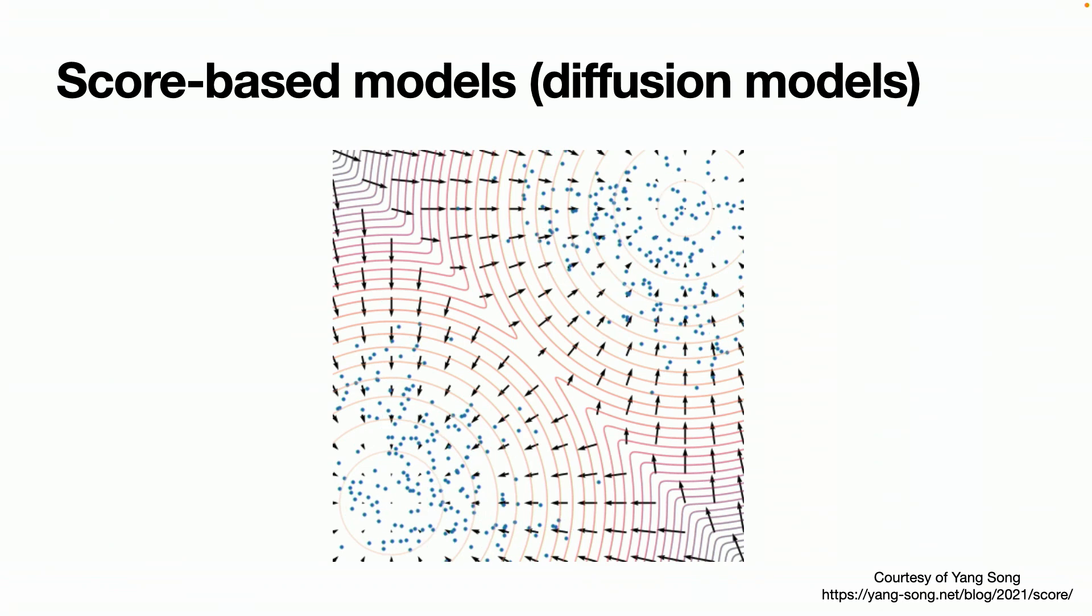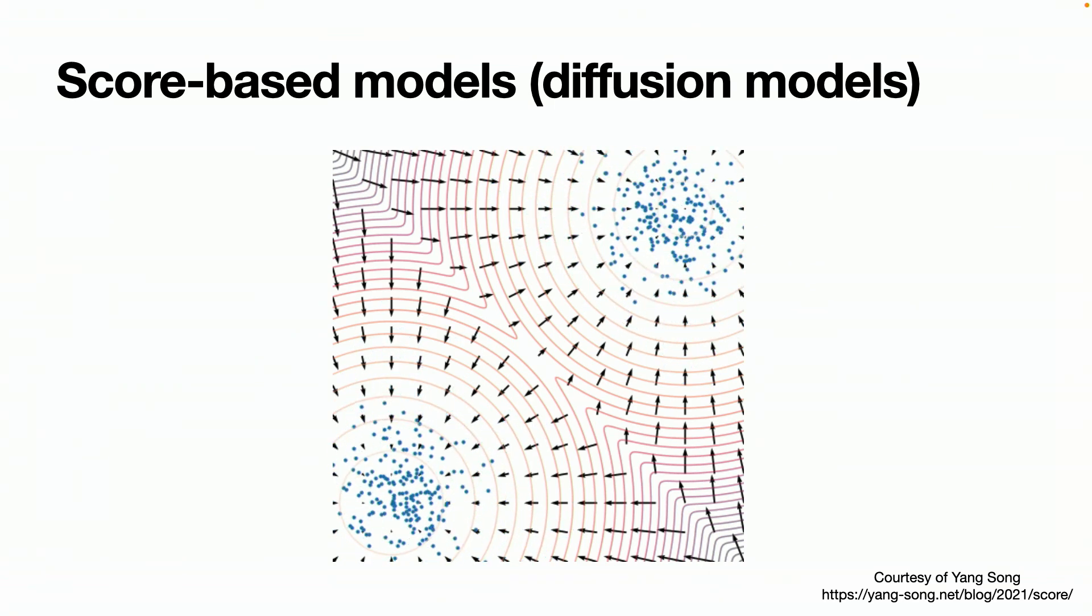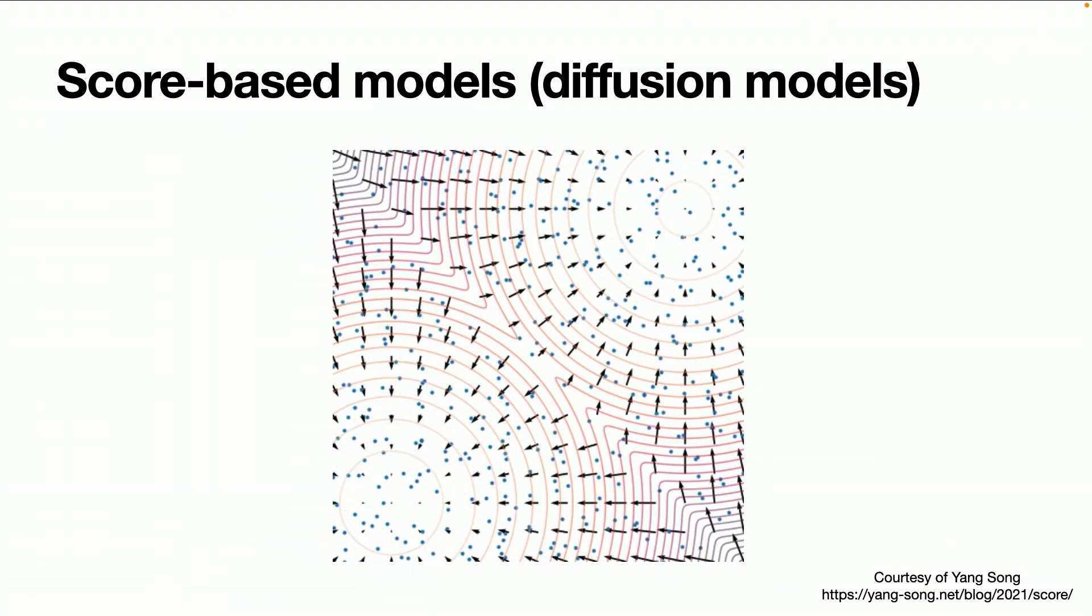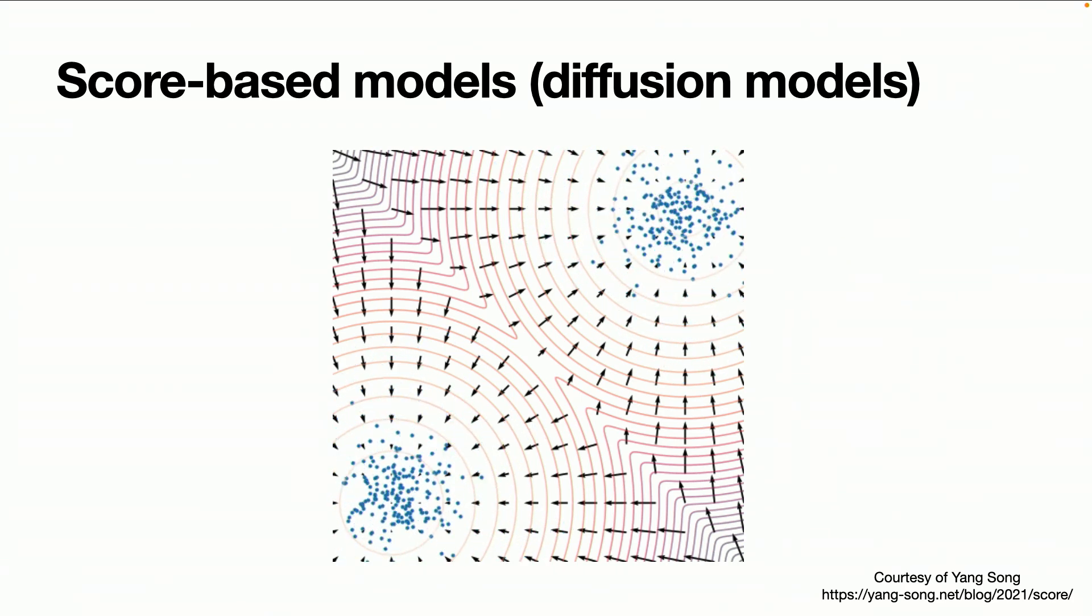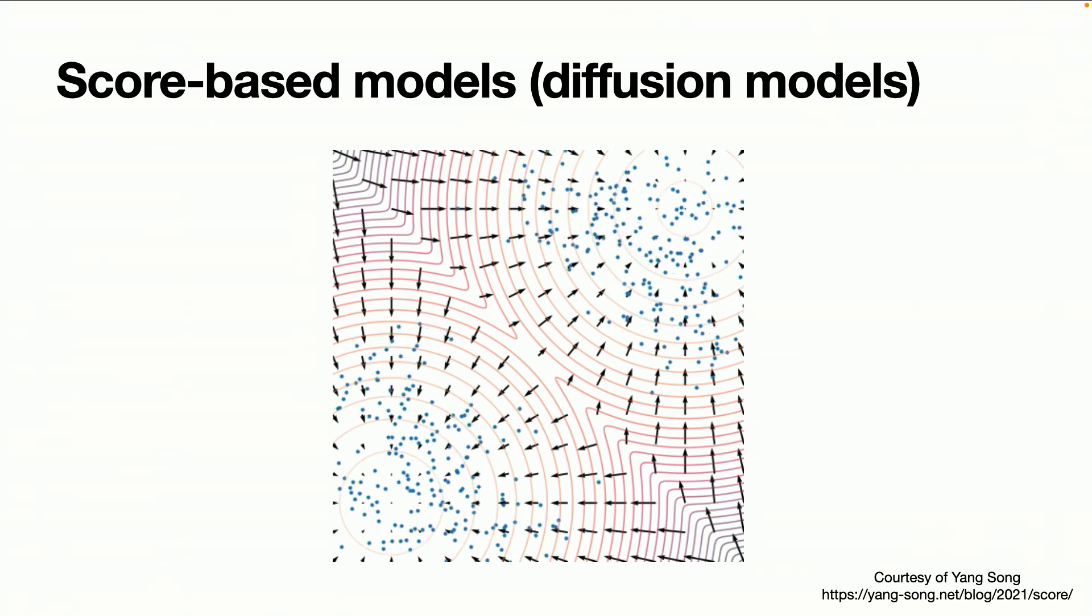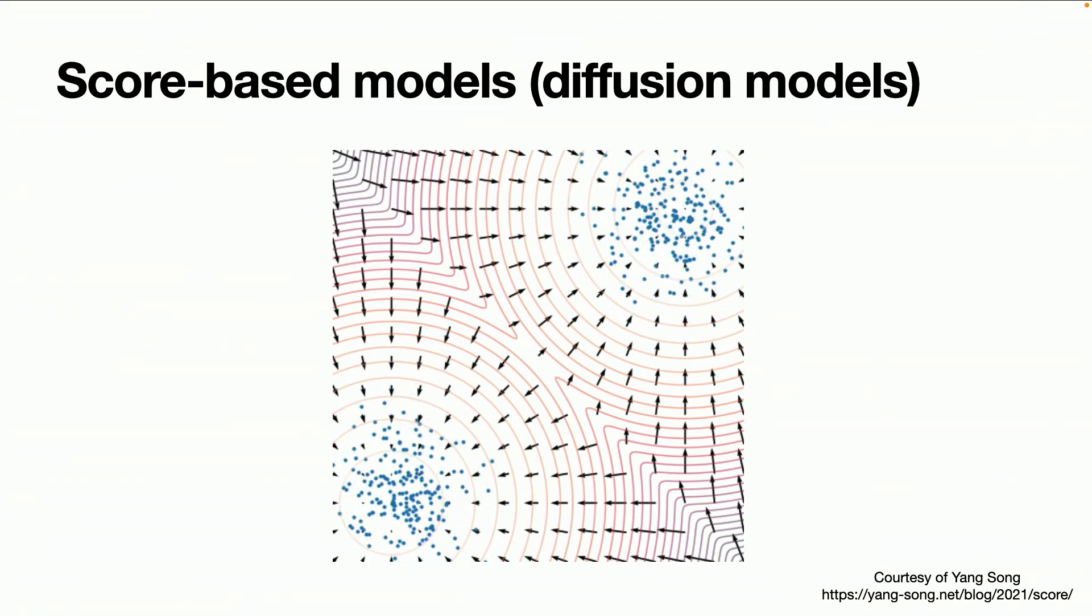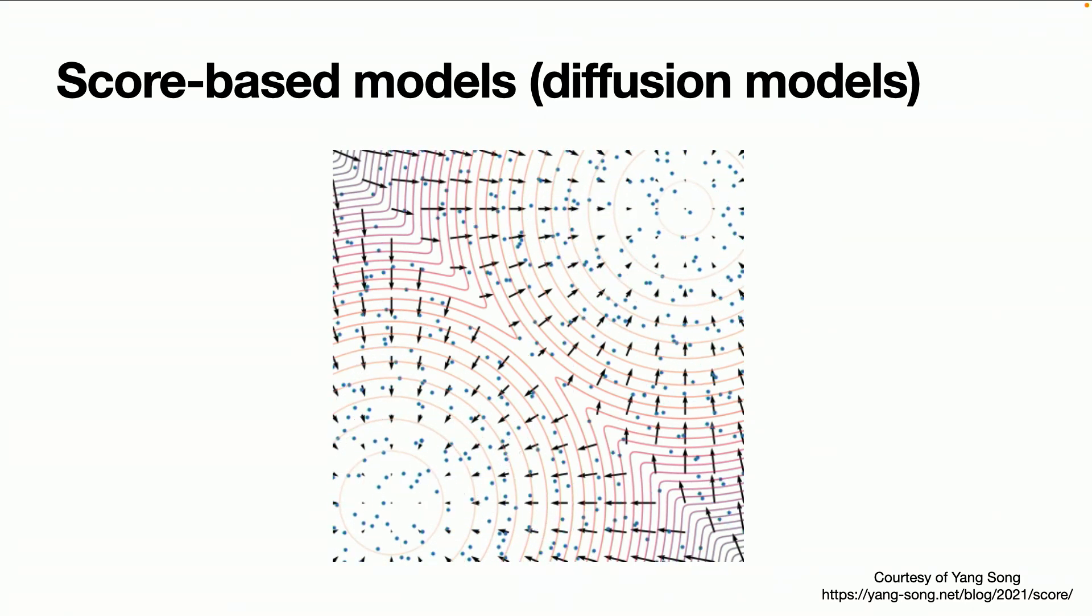Here's a nice video from the website of Yang Song, the creator of score-based generative models. You can actually see how these samples starting from nearly a uniform distribution converge, finally converges into this bi-modal Gaussian distribution.